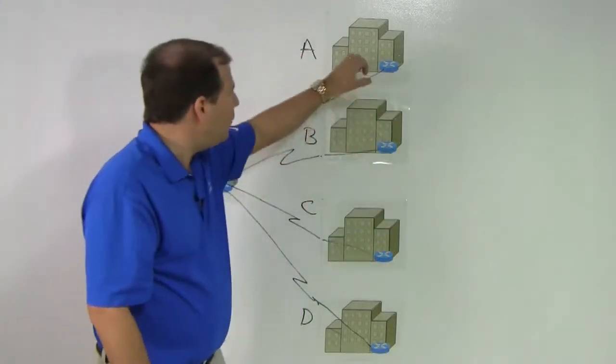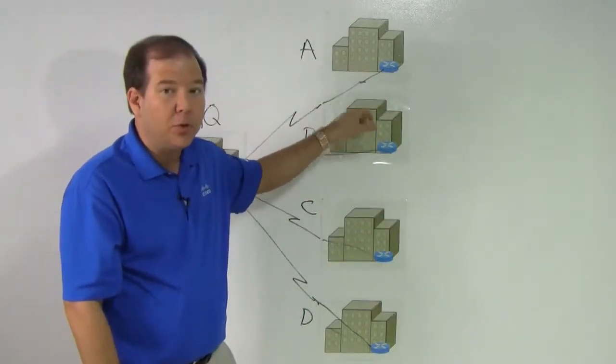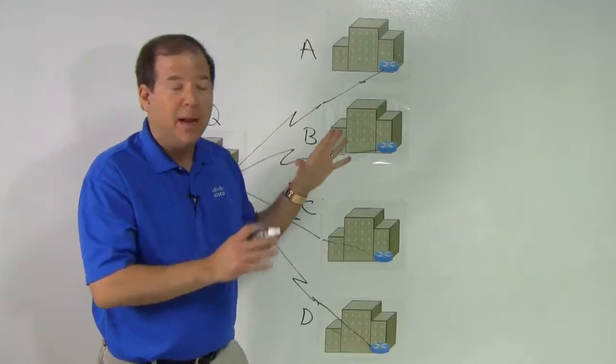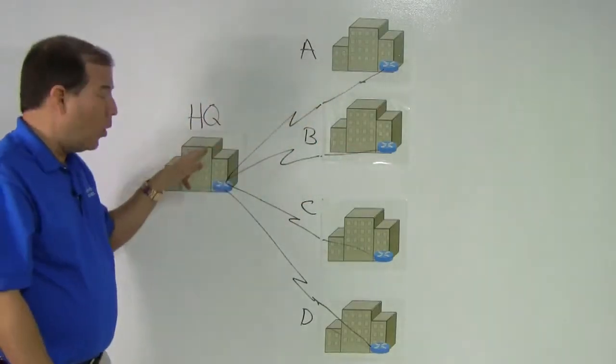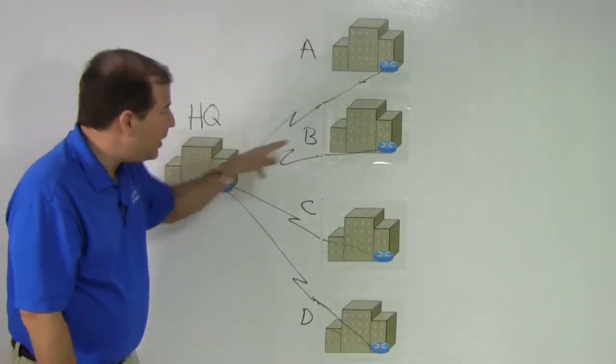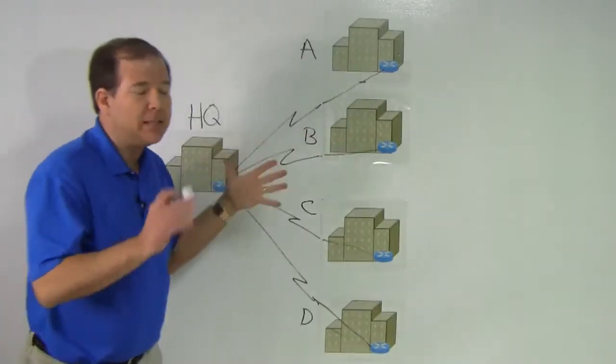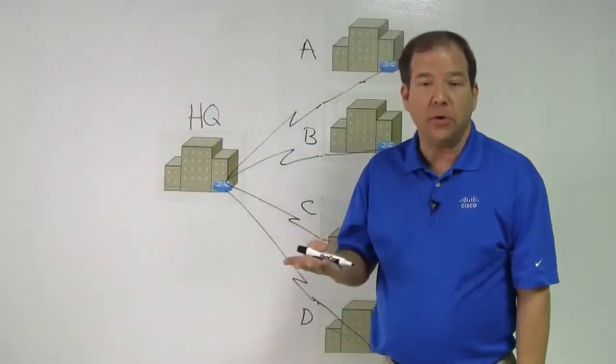If I wanted to go from A to B, I could not go directly from A to B. There's no direct link. I would have to go from A over to the HQ site, then back over to B. That's not optimal because I'm having to go through an extra hop.